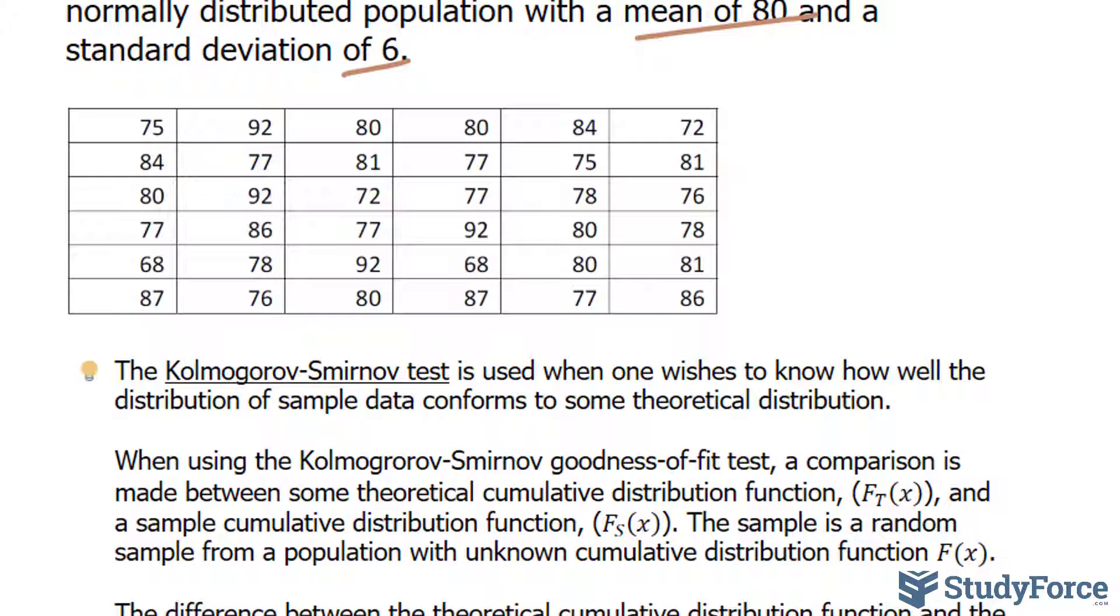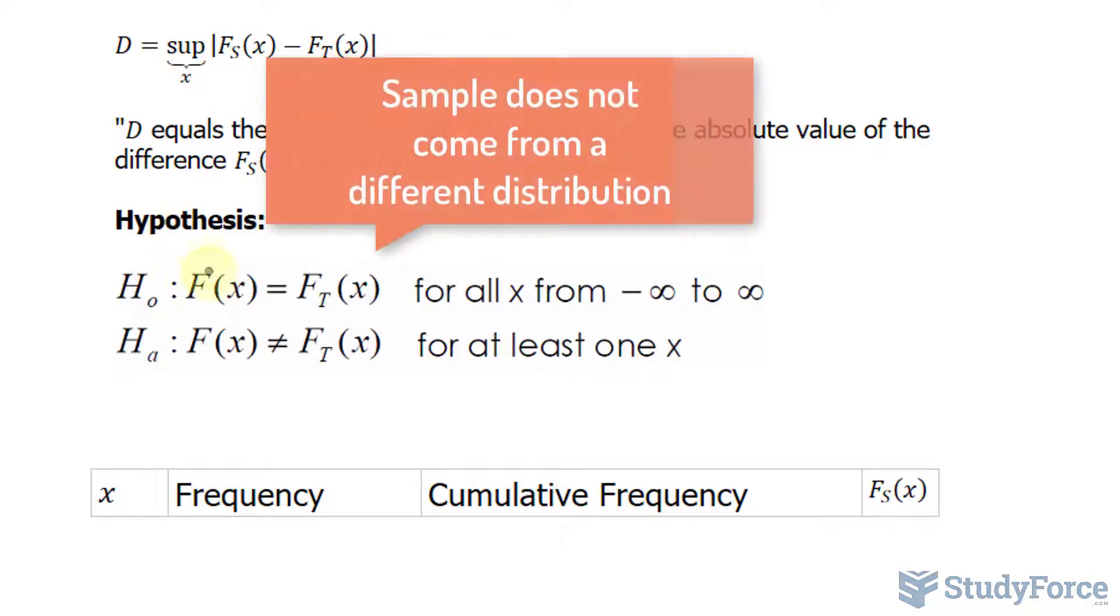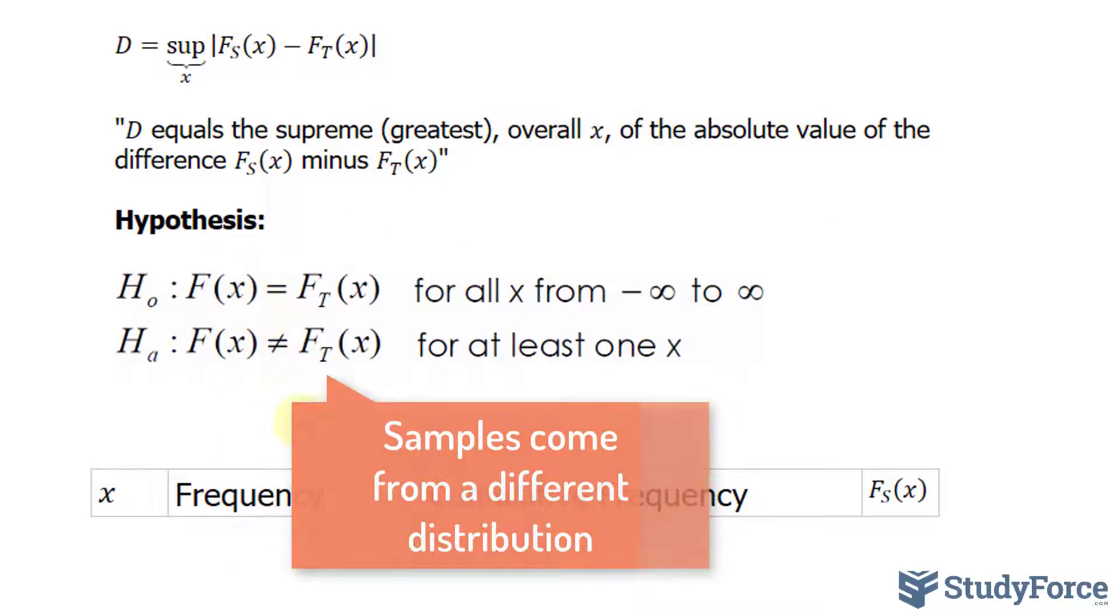We need to write a hypothesis, and the hypothesis when it comes to doing this test is written like this. For the null hypothesis, F(x) equals F_t(x) for all x from negative infinity to positive infinity. The alternative is that they're not equal for at least one x value.